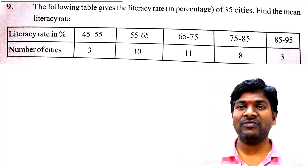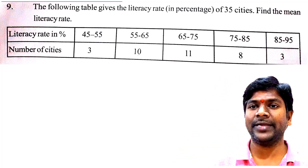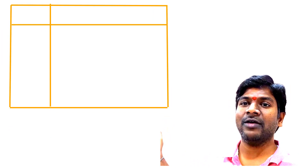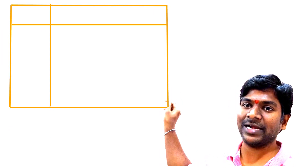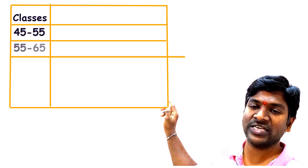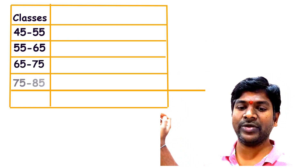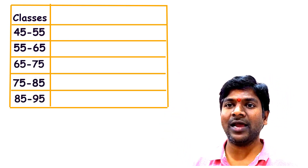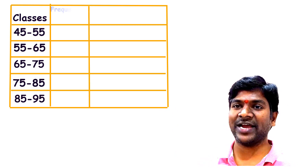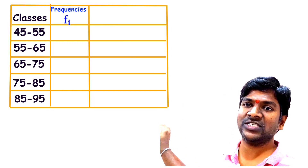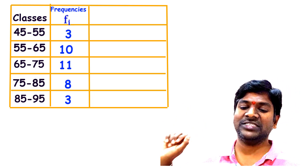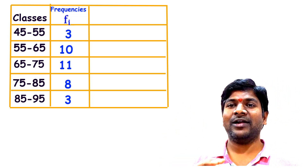We solve this problem using a vertical table. The first column has literacy percentage (class intervals): 45–55, 55–65, 65–75, 75–85, and 85–95. The second column has number of cities (frequency fᵢ): 3, 10, 11, 8, and 3. The formula for mean using step deviation method is x̄ = a + (Σfᵢuᵢ / Σfᵢ) × h.